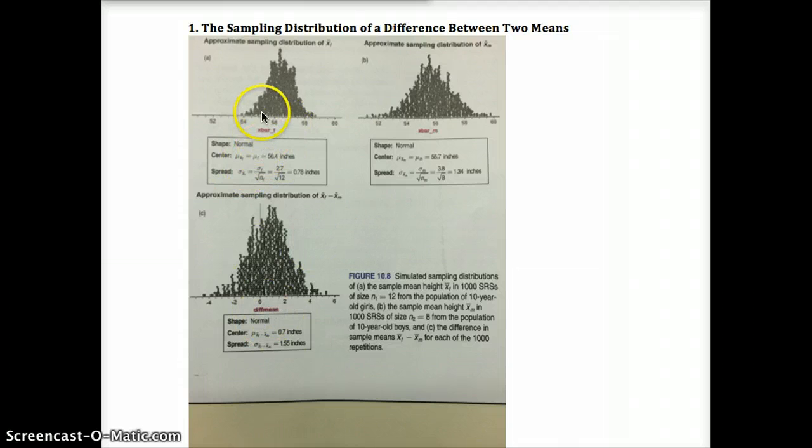Here we checked our normal condition to see if the shape is normal. We're well over 30 here, so we know the CLT tells us that our population is normal. Remember that central limit theorem only applies to sample means, not to proportions. We check that for both, and then we know that the difference is also normal.